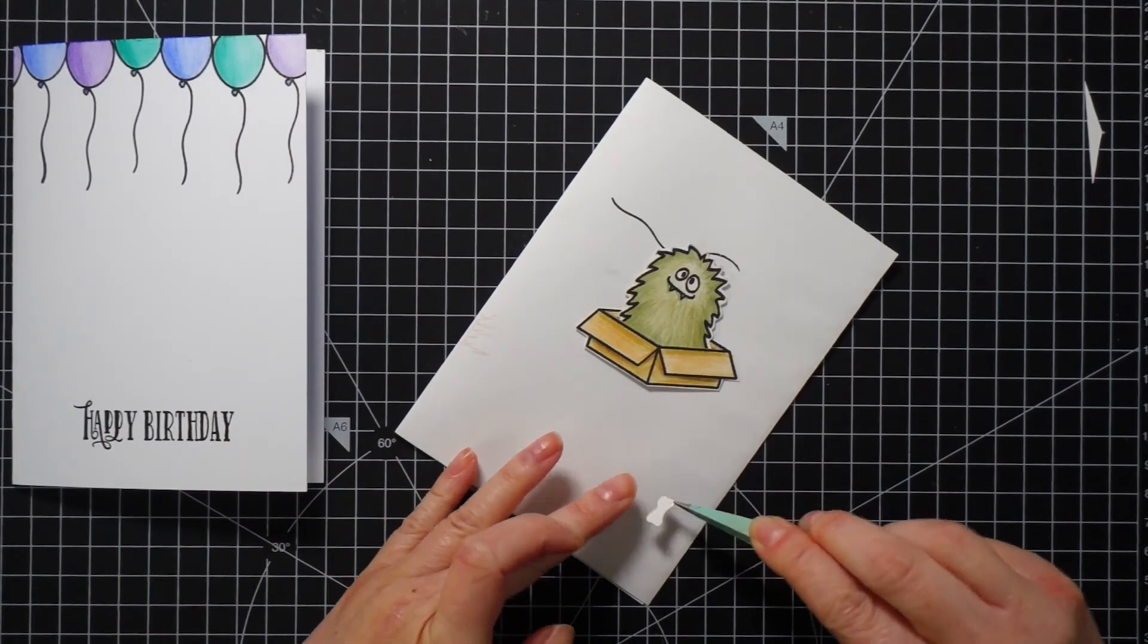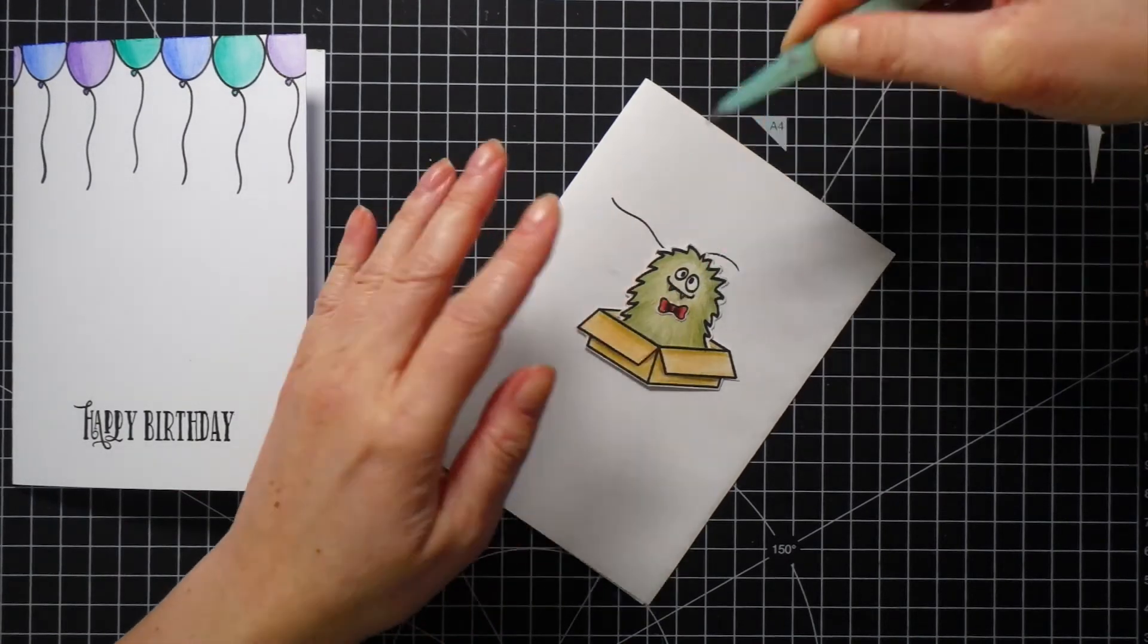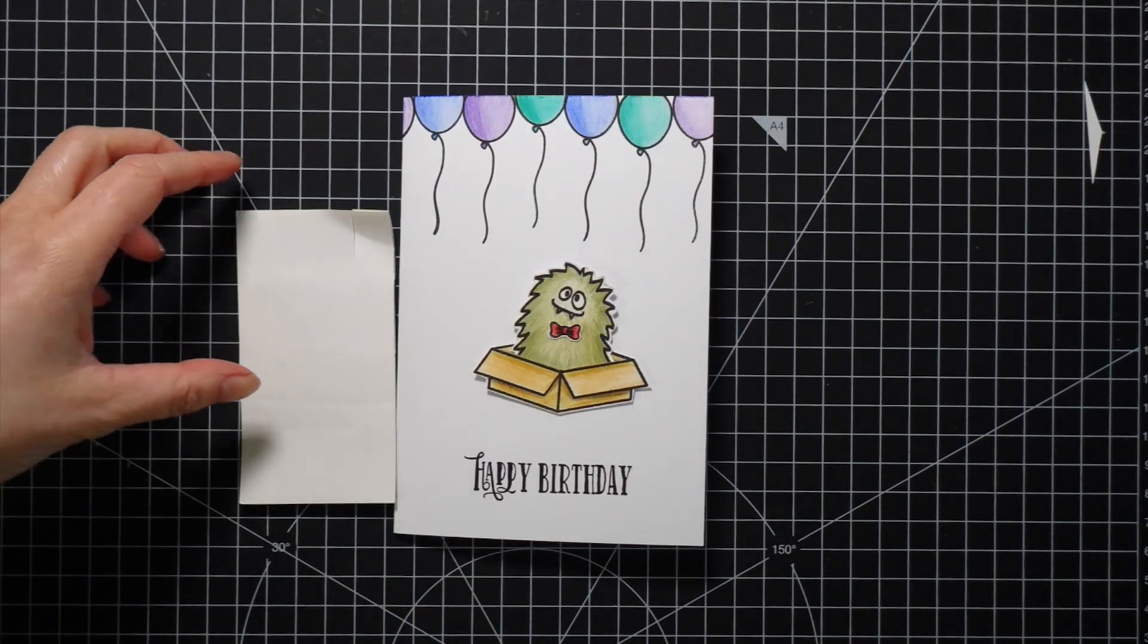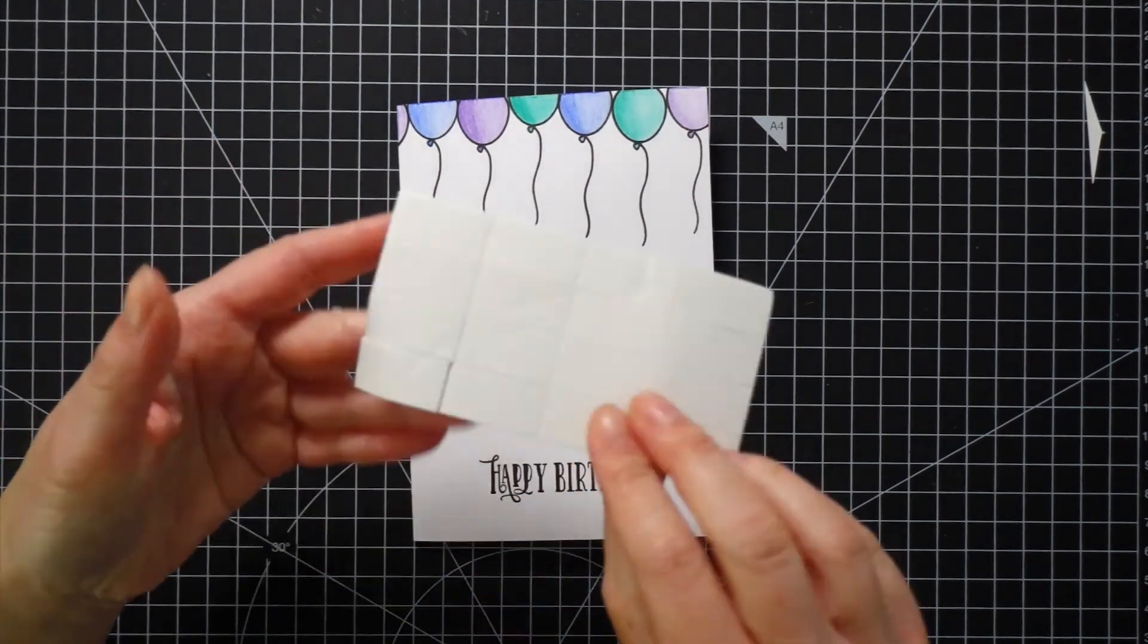I also stamped and colored a bow that is in the stamp set and I adhered it onto the monster. And lastly I adhered the monster on top of a white card base using a double-sided foam tape.